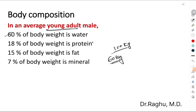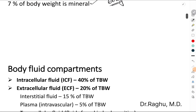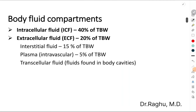18% of the body weight is protein, 15% is fat, and the remaining 7% of the body weight is mineral. Now this 60% of the body weight, which is water, it is divided into two compartments.